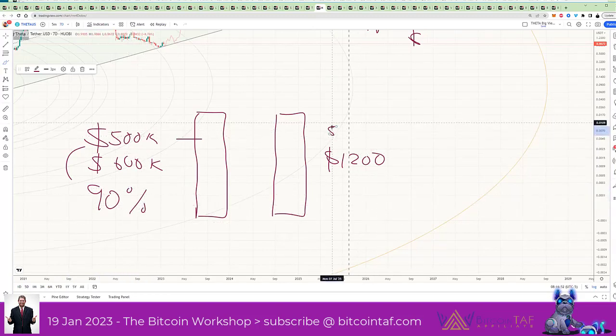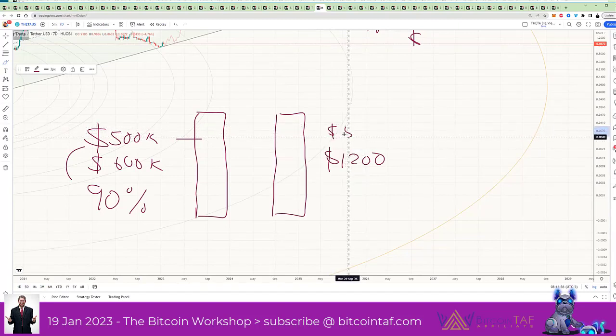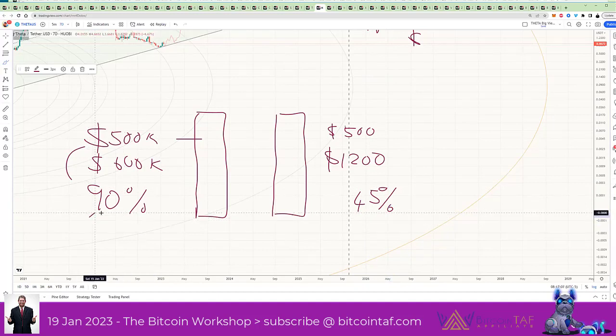Now, you still owe the bank $500,000. What is your debt ratio now? Your debt ratio has come down. You barely owe the bank 45%. Now, what has happened here? Your debt has come down to 45%.